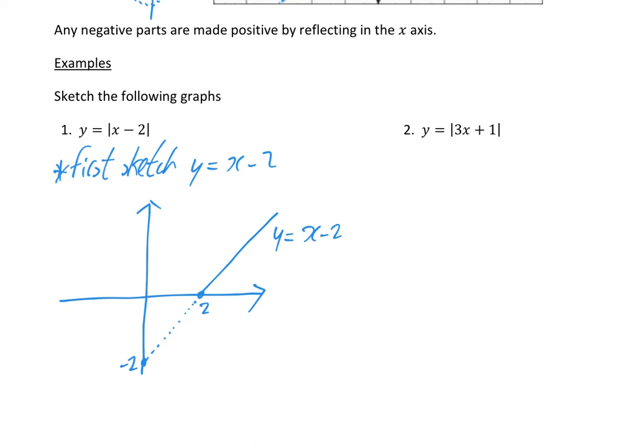For the modulus, any bit that's underneath the graph — and remember this line continues on — any bit that's underneath just gets bounced up, reflected up. So that's what y is equal to modulus of x minus 2 looks like. It's very easy to do: draw the original graph, and then any bits that are underneath, you just flip them up.